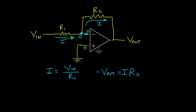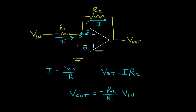Since I equals Vin over R1, we can combine these two equations. Vout equals negative I times R2, and substituting I gives Vout equals negative R2 over R1 times Vin. So the output voltage is the input voltage inverted in polarity, multiplied by the ratio R2 to R1. Making R2 greater than R1 amplifies the signal; making R1 greater than R2 attenuates it — but in both cases the voltage is inverted.